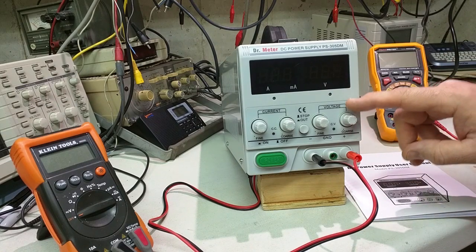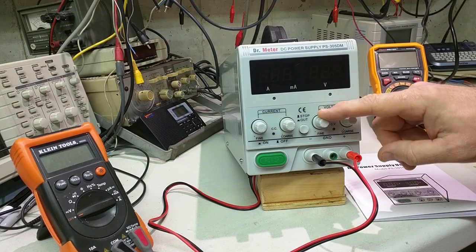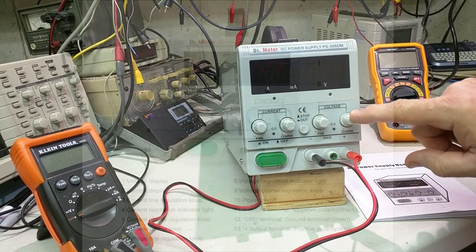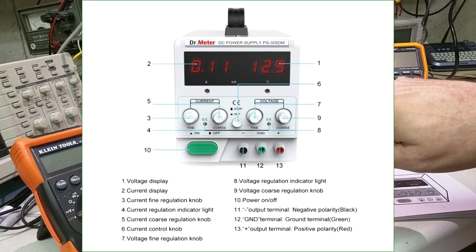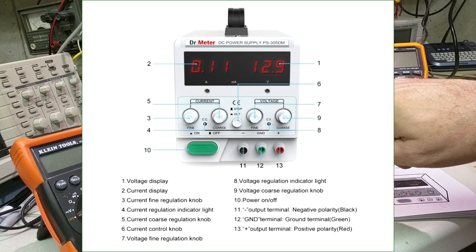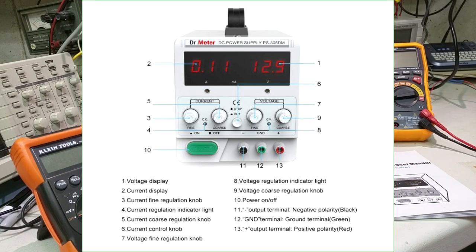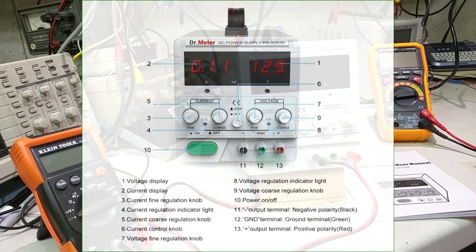Very nice. You have a voltage adjustment, fine and coarse, and it goes from zero to 30 volts. You have a fine and coarse adjustment for current from zero to five amps. So that means it'll produce 30 volts at five amps maximum.